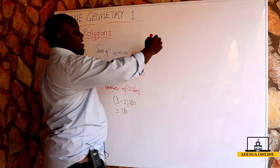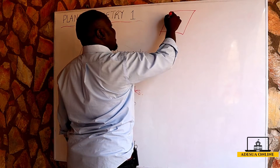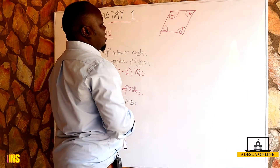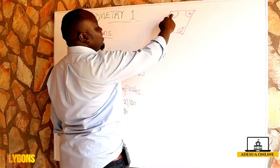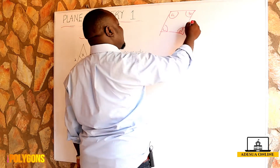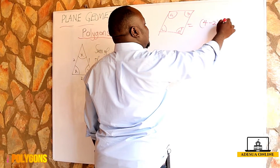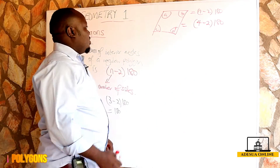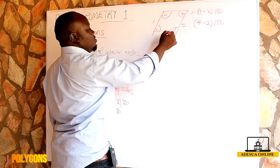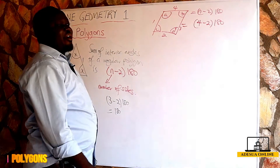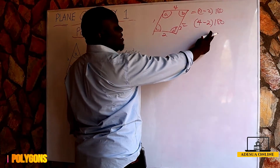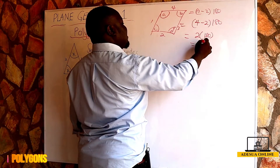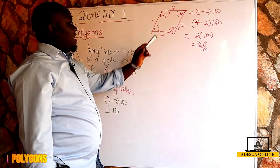We all know from our previous lesson that the sum of interior angles of a triangle sums up to 180 degrees. The same way, we pick a quadrilateral — which has four sides, let's say A, B, C, D — with four interior angles. To find the sum: four minus two times 180, because the formula gives us n minus two times 180, and we have four sides.